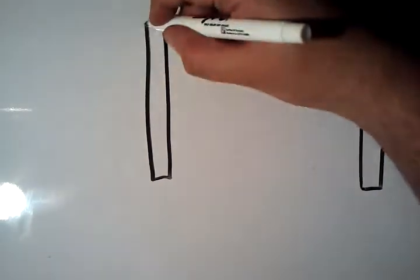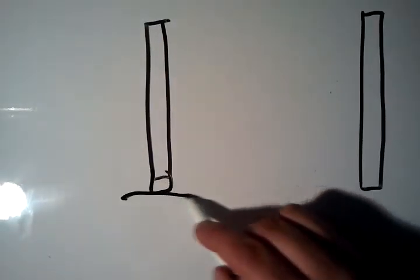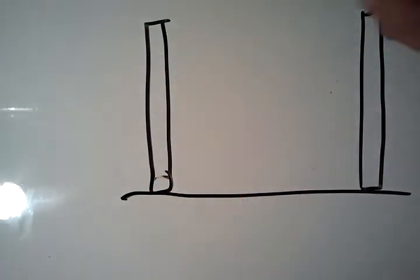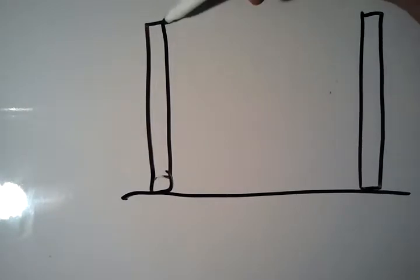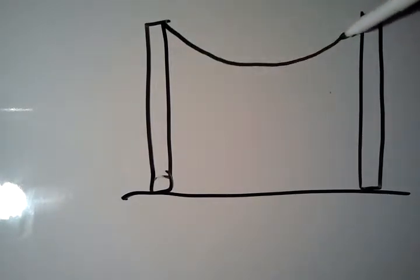So in math, we have an object called a catenary, and if we describe it physically, let's say we have two telephone towers which are the same height off the ground. So here's the ground. If we have a rope between them that has a little bit of slack, the rope is going to form this kind of shape.